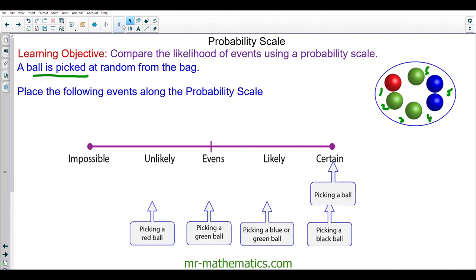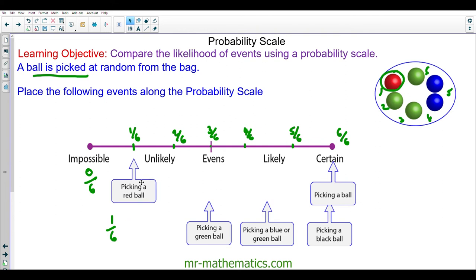The probability of picking a red ball. You can see there is one red ball out of six in total. So impossible would be zero out of six. Certain would be six out of six. Evens would be three out of six. So approximately one-sixth, two-sixths, three-sixths is evens, four-sixths, and five-sixths. You can see that picking a red ball is one-sixth, so that would go here.